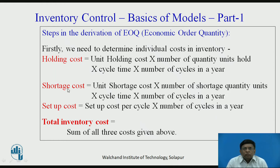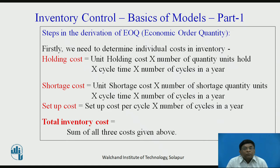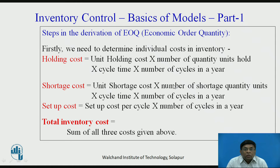Coming to shortage cost, it follows exactly the same approach as holding cost. Here we consider unit shortage cost, specified as rupees per unit item of shortage per unit time. We multiply unit shortage cost by the shortage quantity and cycle time to get the per-cycle shortage cost; multiplied by the number of cycles, we get the annual shortage cost. For setup cost, normally specified as rupees per setup per cycle per order, we simply multiply by number of cycles to get the annual setup cost.